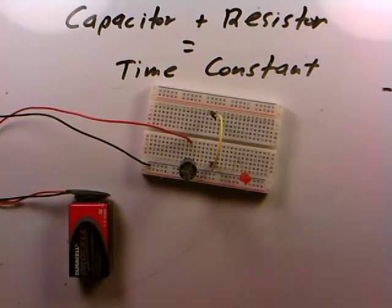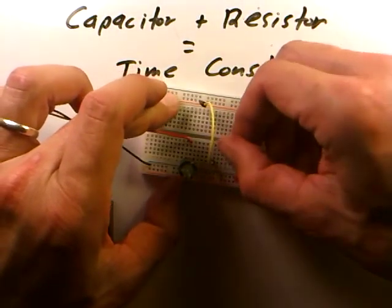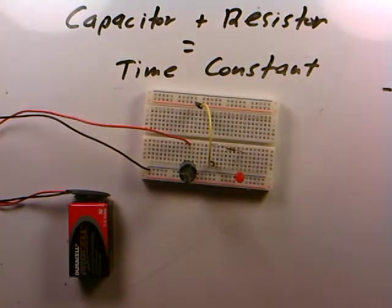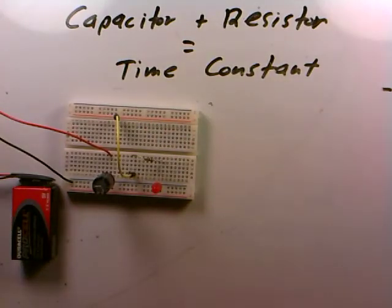But what we'll do first is let's discharge the capacitor through the LED through our 100 ohm resistor. So I'm going to connect the 100 ohm resistor there and there. The 100 ohm resistor is going to set that flow rate that the current will have as it leaves the capacitor. Let's see if we can do a quick calculation.